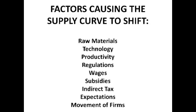Wages are another cost of production. If wages rise, then production costs more, so firms produce less and supply falls, causing a left shift of the supply curve. It's important to note that wages rise over time, and there's also inflation, so both need to be taken into account.